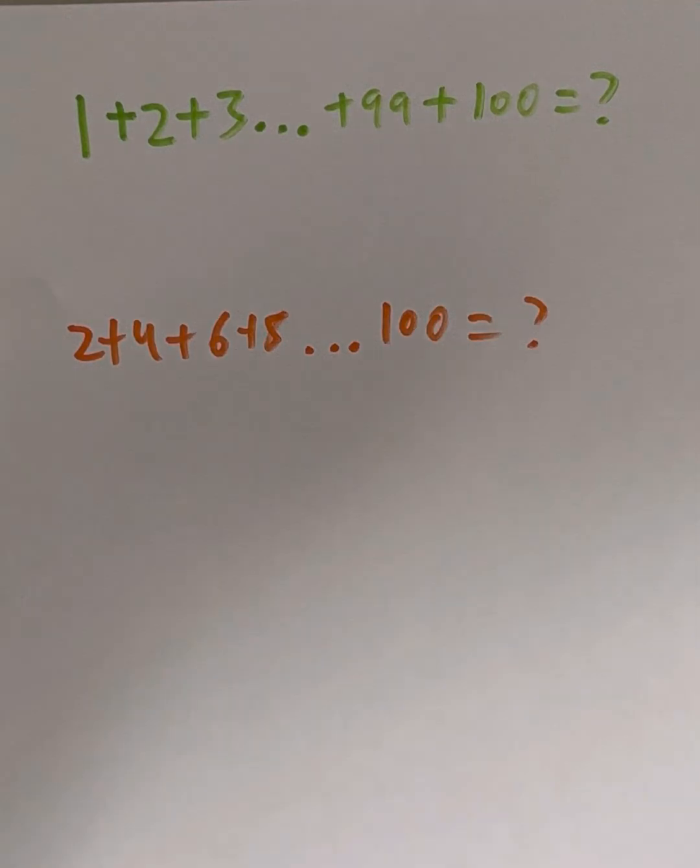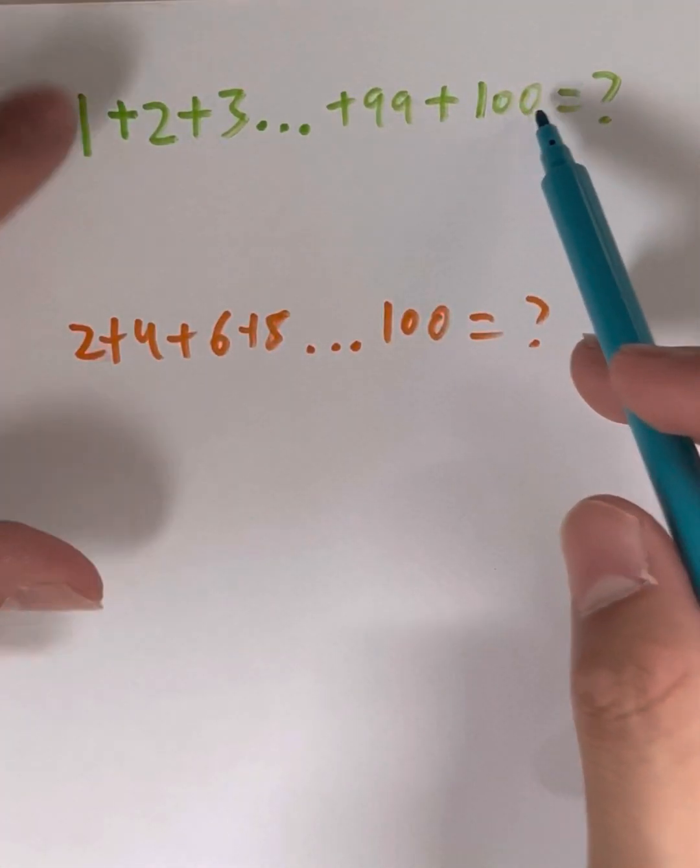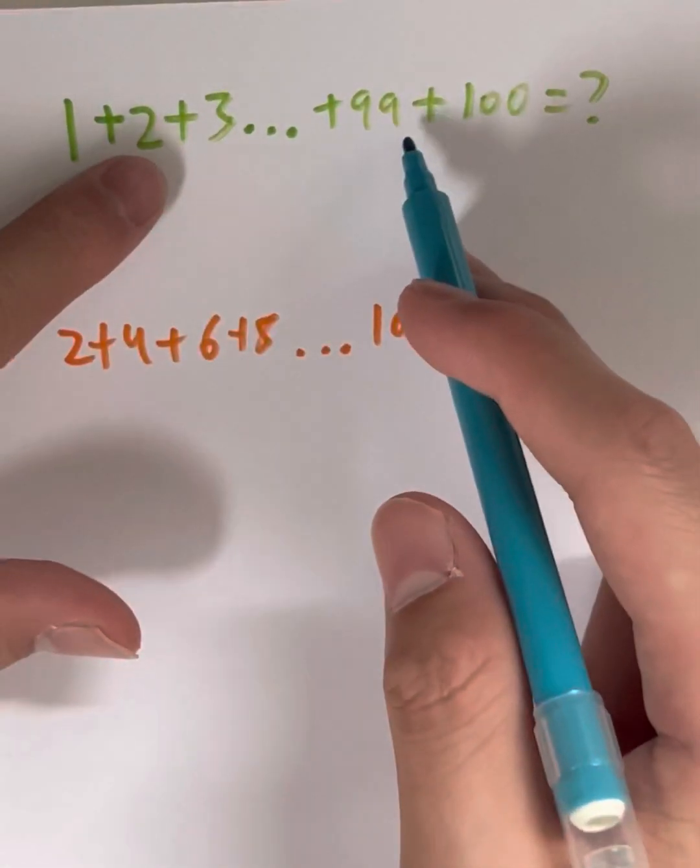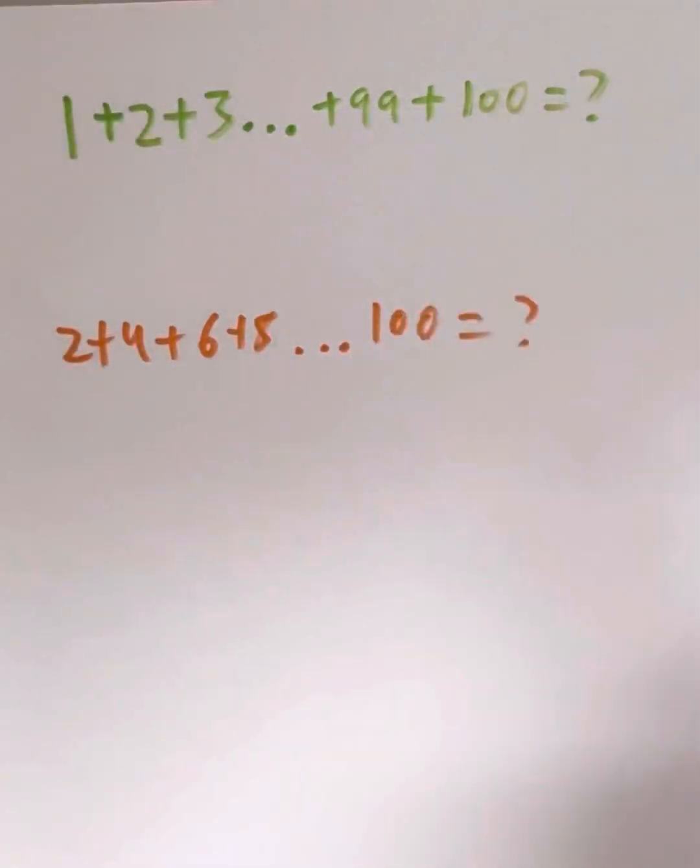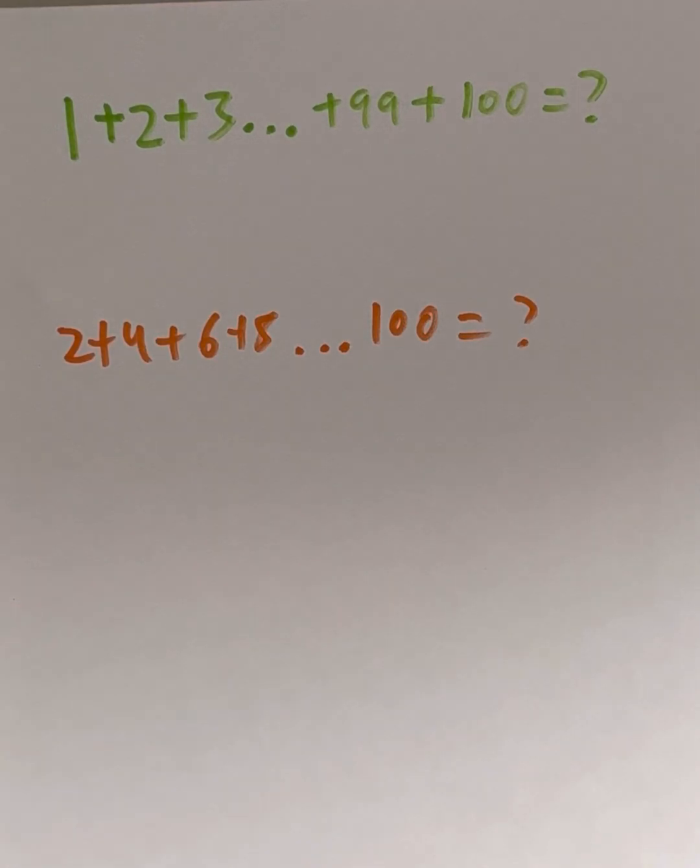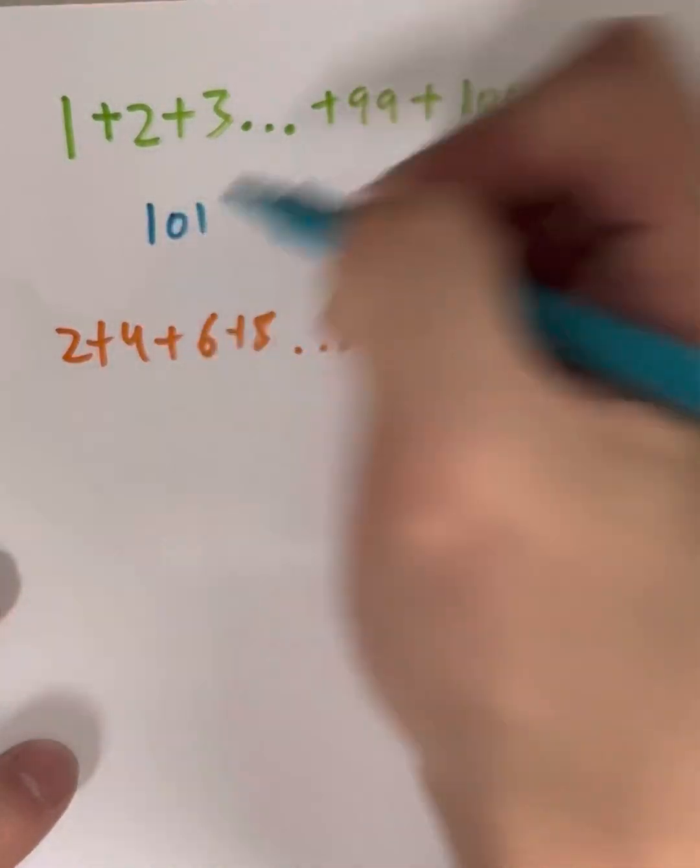So basically, the simple solution is you pair them up. As you can see, 1 plus 100 is 101. 2 plus 99 is 101. What's 3 plus 98? 101. So how can we use that 101? 101 is your magic number in this case.